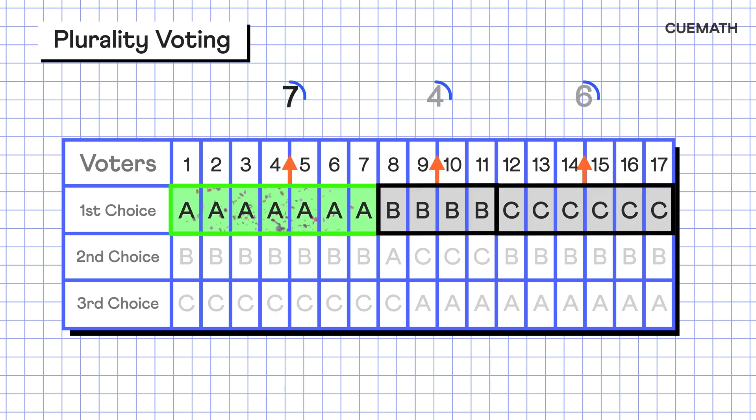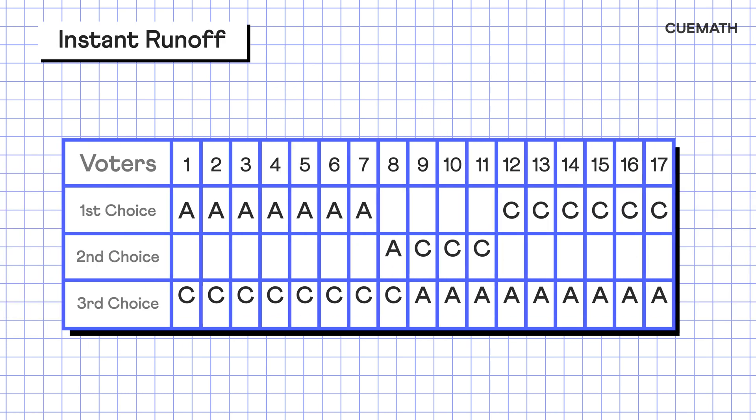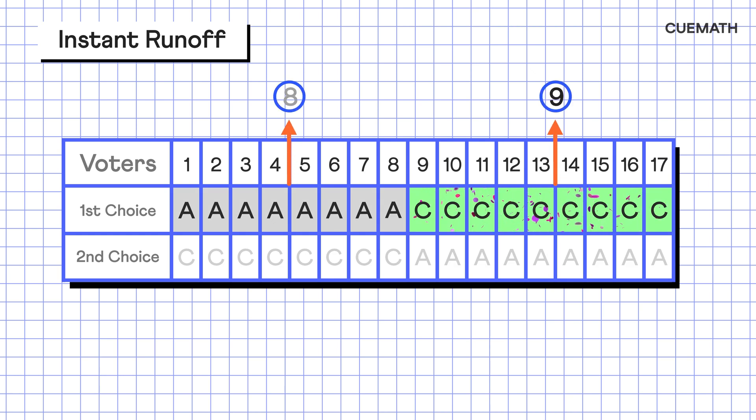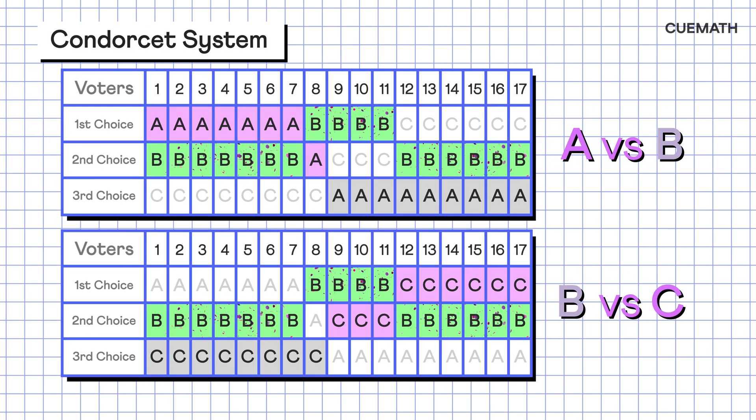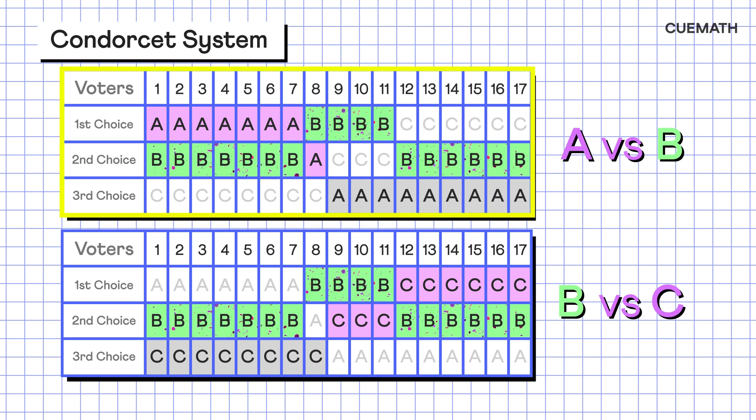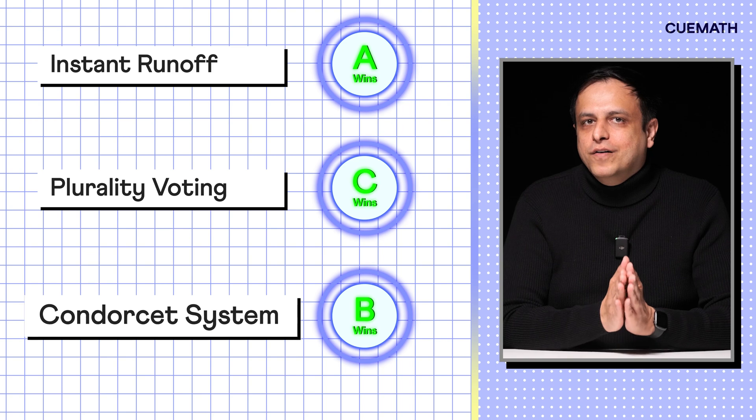Let's see why with one last example involving 3 candidates and 17 voters. Using plurality voting, A wins with 7 votes. With instant runoff, B is eliminated and C wins with 9 votes. And in a Condorcet system, B wins against both A and C. The outcome changes entirely just based on which system is used. So where does the real power lie? With the voters or with those who choose the voting method?